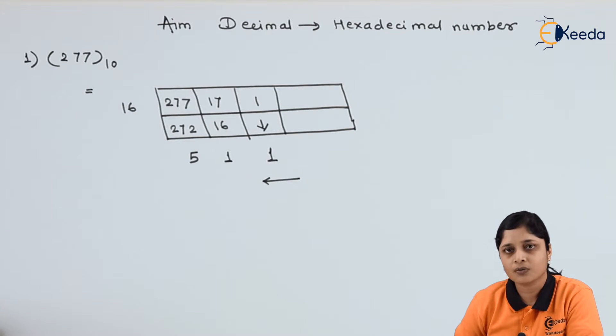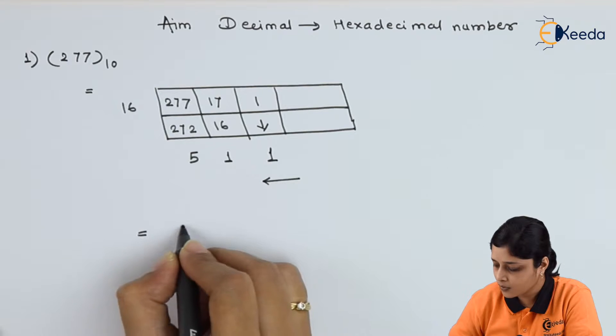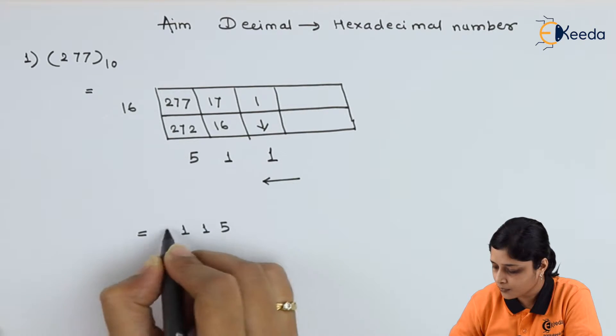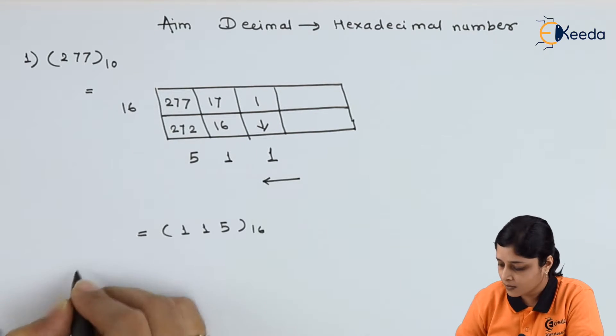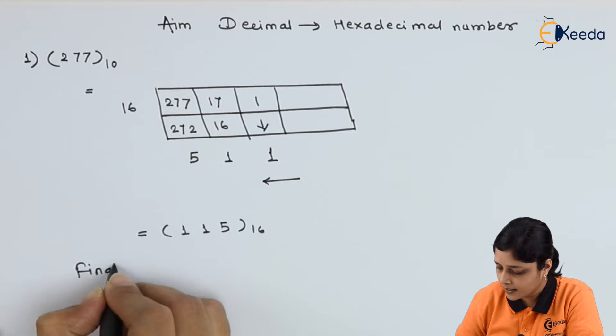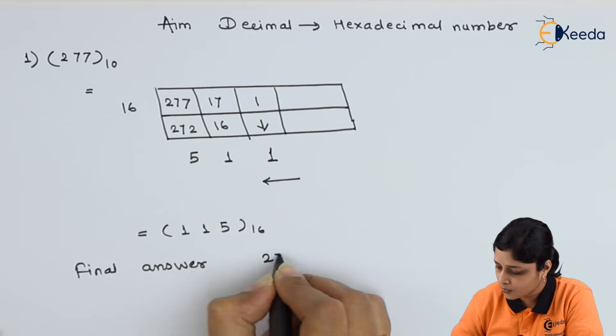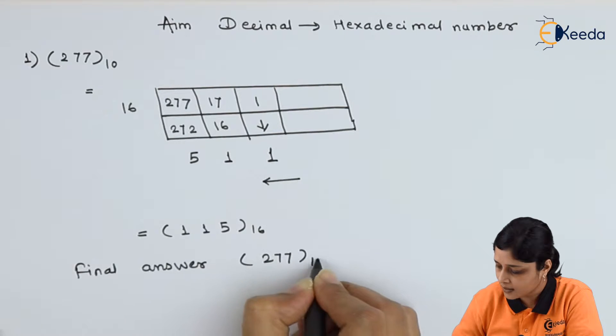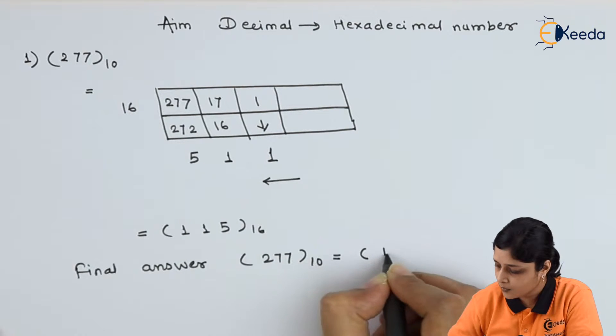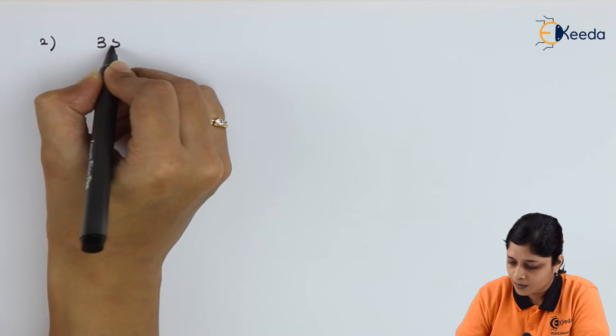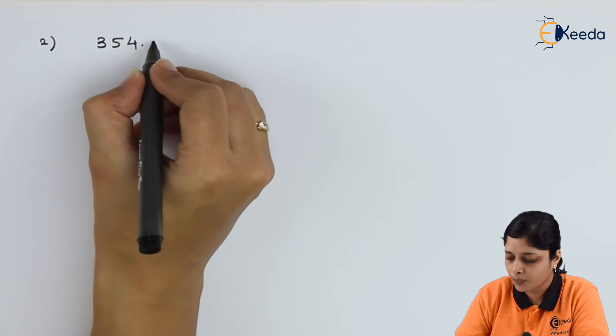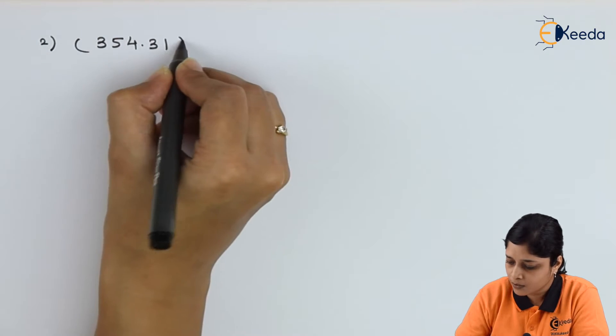While writing the answer, always draw this arrow and write down 115 to the base 16. Final answer will give you 277 to the base 10 equals to 115 to the base 16. Let's start with second example: 354.31 to the base 10.